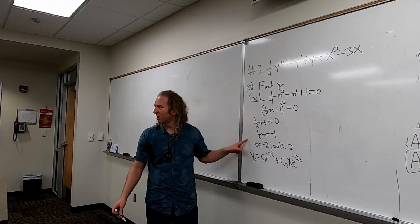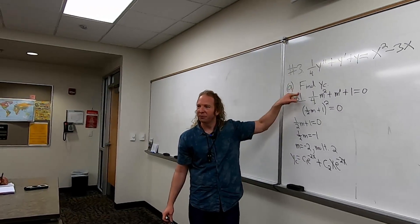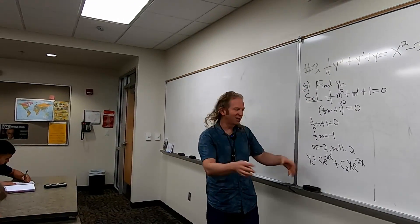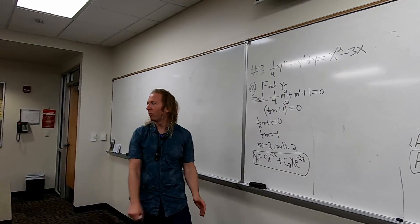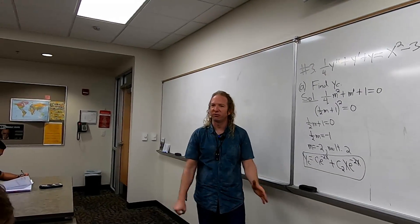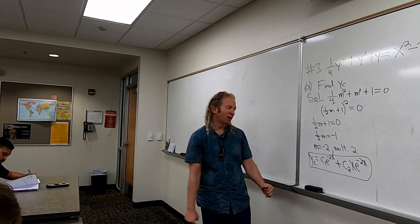You notice how these are easier in this section. In 4.3, the part A was harder because that was the whole section. In this section, they're all relatively easy. So that's our homogeneous solution or complementary function.